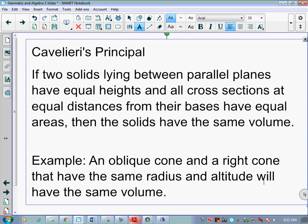In our next slide we have what is called Cavalieri's principle, which means if two solids lying between parallel planes have equal heights and all cross-sections at equal distances from their bases have equal areas, then the solids have the same volume. Example: what you see here on page 555 is if I have an oblique cone and a right circular cone, because they have the same radius on their base and the same altitude line perpendicular from their base to the opposite vertex, they're going to have the same volume.